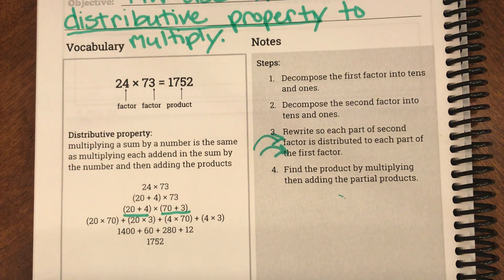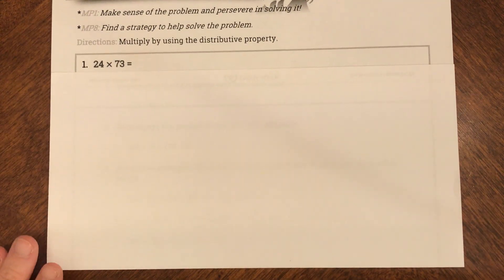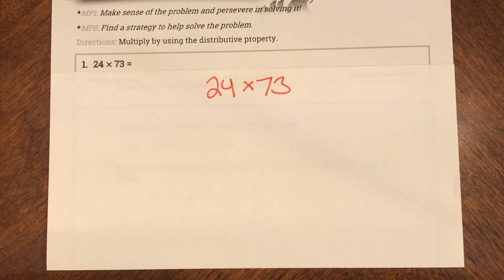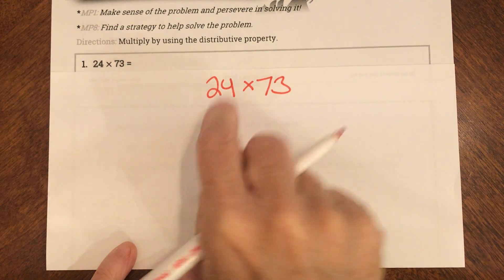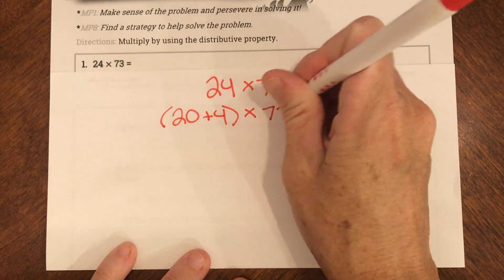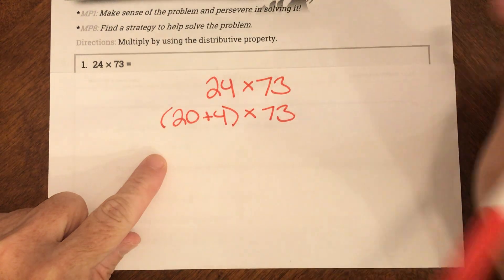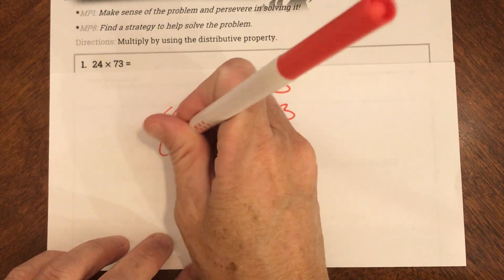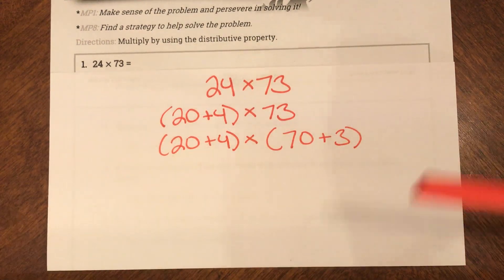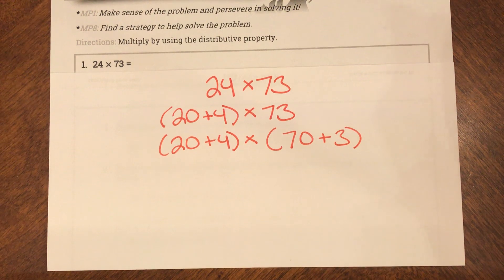Here is my first problem: 24 times 73. I'm going to rewrite it right here. Step one: decompose the first factor, so instead of 24, I'm going to decompose that into 20 plus 4. Then step two: decompose the second factor, so I have 20 plus 4 times 70 plus 3 — I just broke that up, kind of like when we do expanded form. This is where it gets kind of tricky — this is where I'm going to be passing out.